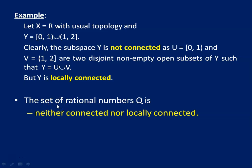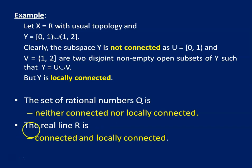The set of rational numbers Q is neither connected nor locally connected. We have seen in our previous lecture that Q is not connected, and in the same manner Q is not locally connected. The real line R with usual topology is connected and locally connected, because we cannot find two disjoint open intervals whose union is R itself, so R does not have a separation and is always connected and locally connected.